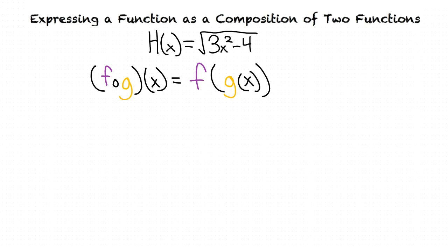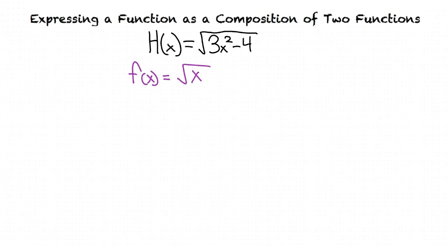To find our two functions, we can split up our original function into two parts. If we go back to our original function, we need to find a method to split it into two parts. In this case, we're going to look at the square root by making f of x equal the square root of x. This leaves us with f of 3x squared minus 4.